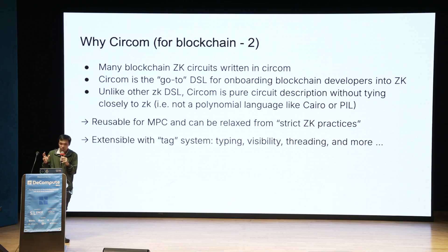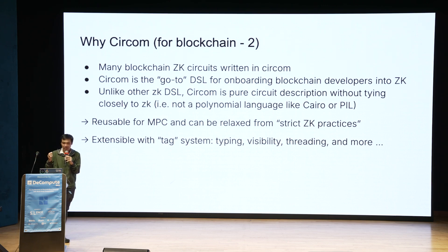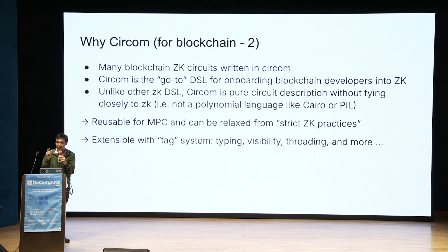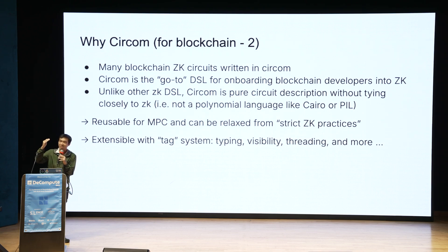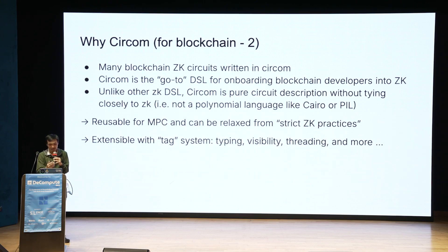Maybe we can do some relaxation from the strict ZK practices, and extend it with a tag system that allows you to tag a wire with some properties — so you can do typing and visibility. By visibility, I mean something can start as a secret and then in the middle you can open it, so you can use it as a condition for branching without doing a multiplexer, which is very similar to opening in MPC. You can also try threading; this tag system is a universal system.